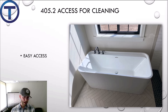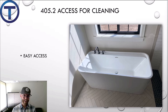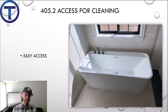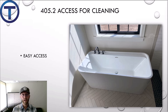405.2 covers access for cleaning. Plumbing fixtures shall be installed so as to afford easy access for cleaning both the fixture and the area around it. You can see in this illustration a freestanding tub. In order to provide access for cleaning, that tub had to be installed with enough room — three or four inches all the way around — so you can sweep behind, vacuum behind, and clean around the fixture. This is a code requirement; we wouldn't want things set up where it leaves a mess you cannot clean.